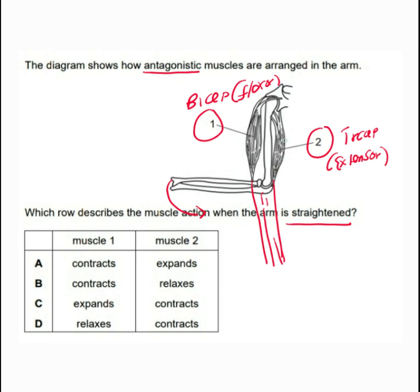The tricep contracts while the bicep relaxes. So muscle one — the bicep — relaxes, and muscle two — the tricep — contracts. Therefore, the answer is D, which describes the muscle actions when you are straightening the arm.